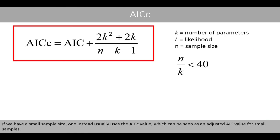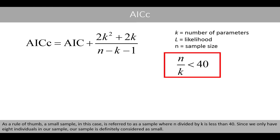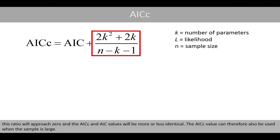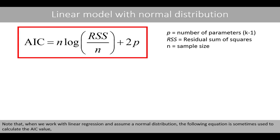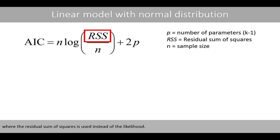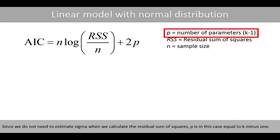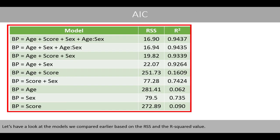If you have a small sample size, one instead usually uses the AICc value, which can be seen as an adjusted AIC value for small samples. As a rule of thumb, a small sample in this case is referred to as a sample where n divided by k is less than 40. Since we only have eight individuals in our sample, our sample is definitely considered small. As n increases, this ratio approaches zero and the AICc and AIC values become more or less identical. The AICc value can therefore also be used when the sample size is large. Note that when working with linear regression and assuming a normal distribution, an alternative equation using the residual sum of squares instead of the likelihood is sometimes used, where p equals k minus 1.